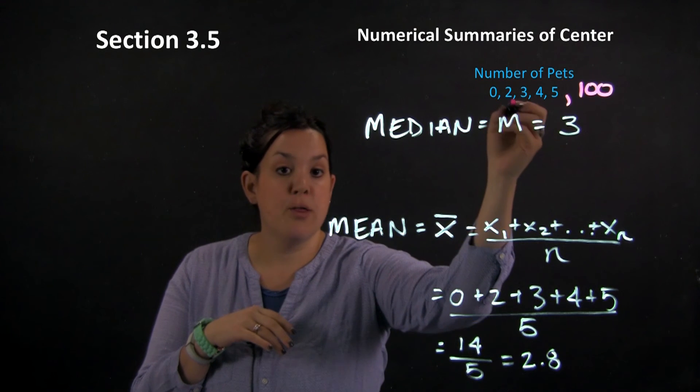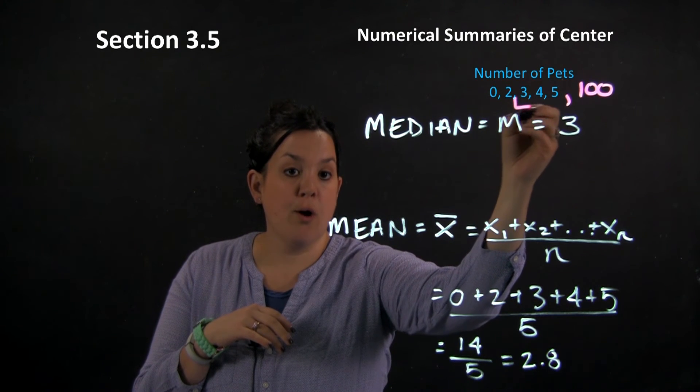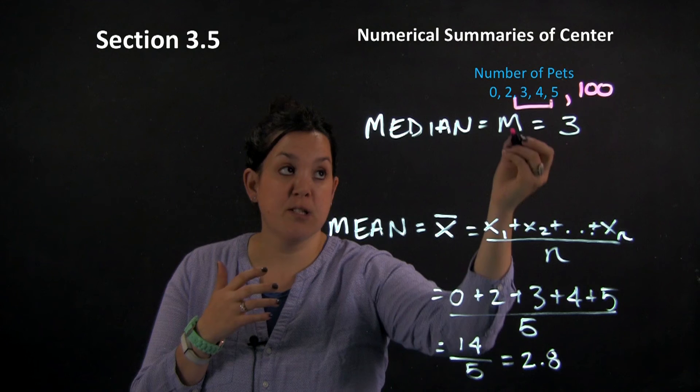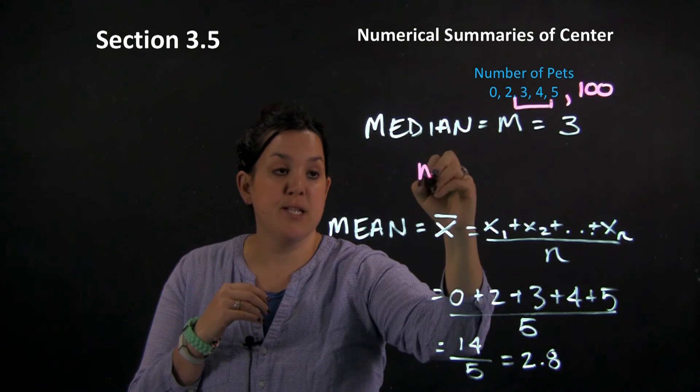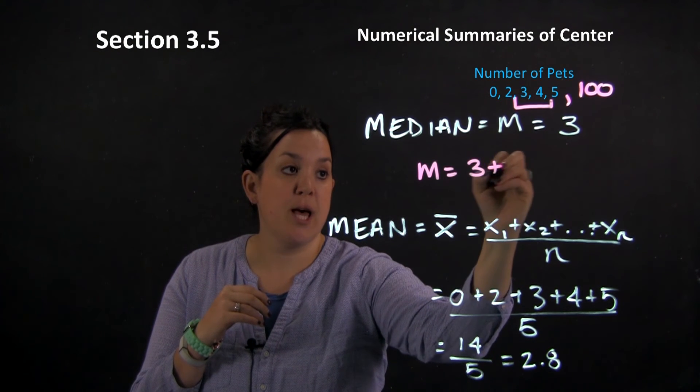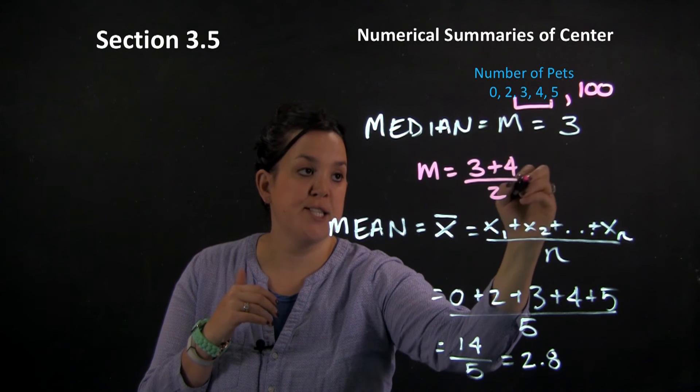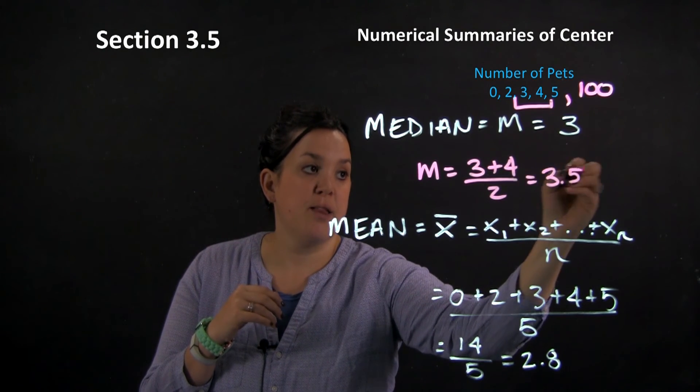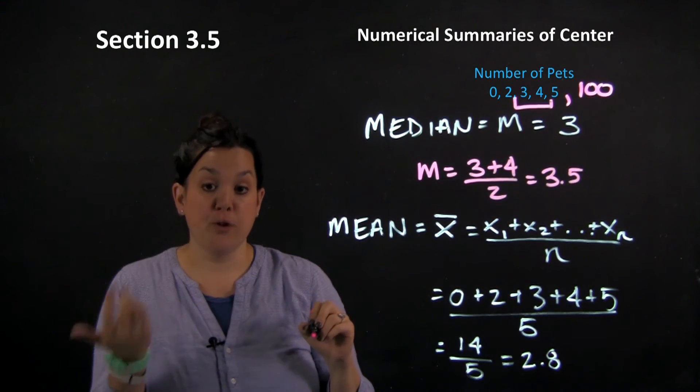So here, 3 and 4 are going to be actually where my middle is located. So to find this median, I'm going to take those two observations and essentially find the average for them. So if there's an even number of observations, you would take the two middle observations,